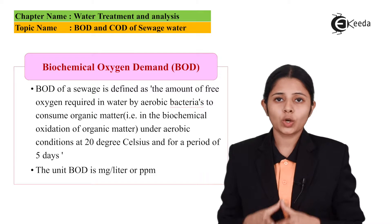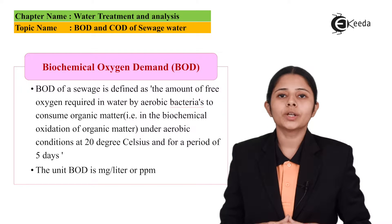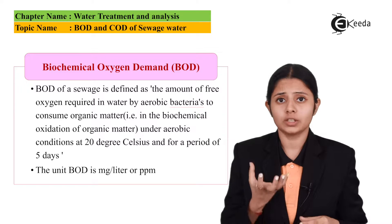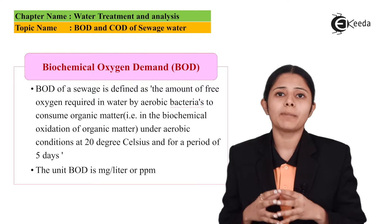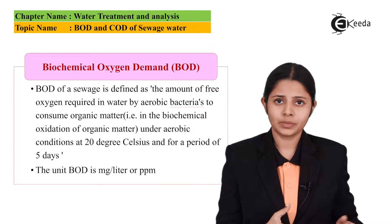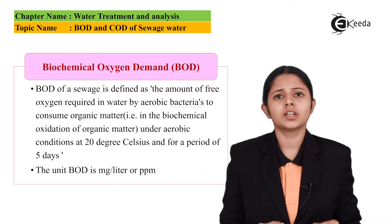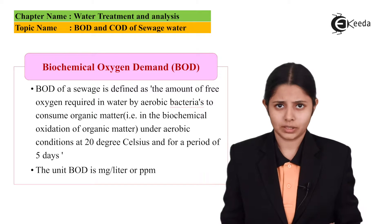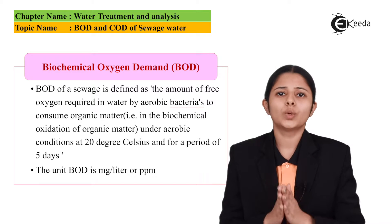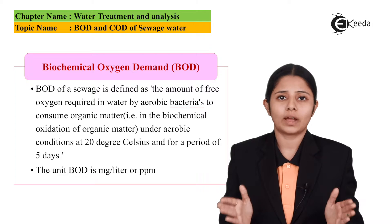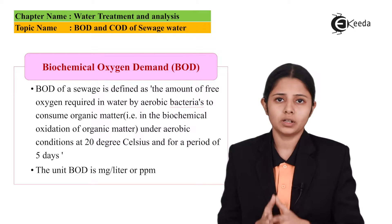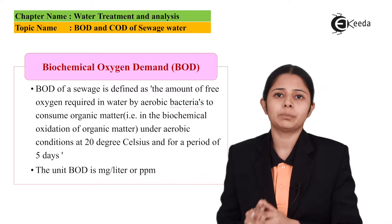BOD — biochemical oxygen demand. BOD of sewage is defined as the amount of oxygen needed in water by aerobic bacteria to consume the organic matter. It is nothing but biochemical oxidation of organic matter. It happens at around 20 degrees Celsius within the span of 5 days. The units for measuring BOD are mg per litre or ppm.